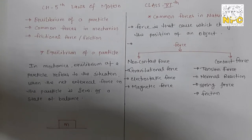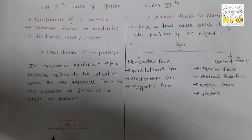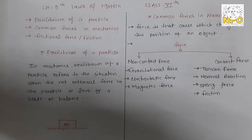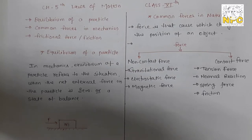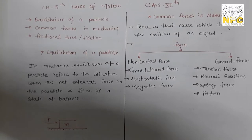Suppose we have a body of mass m placed on a horizontal surface, and initially we have not applied any external force — the body is at rest. If you put an external force in one direction, the body will move. But initially the body is at rest, meaning the forces applied are equal and opposite, they cancel out, and the net force is zero.